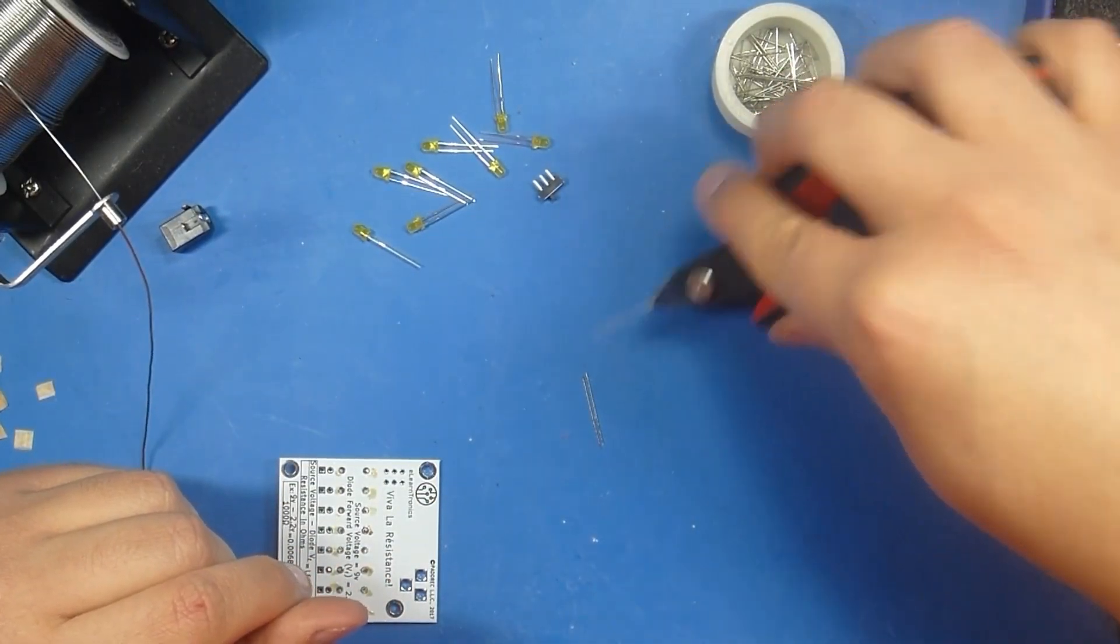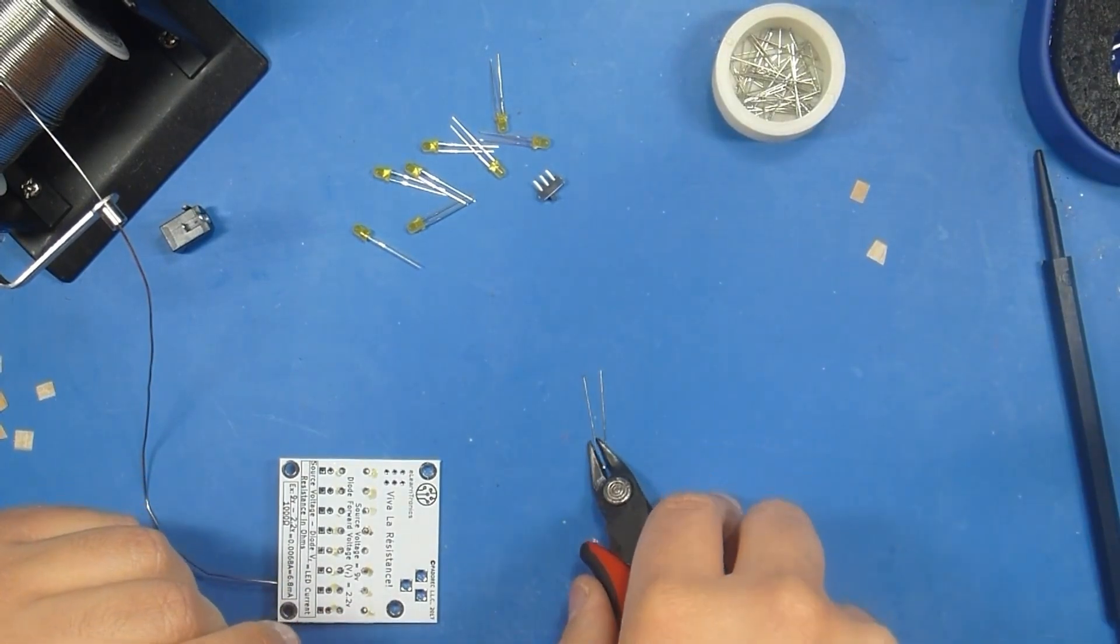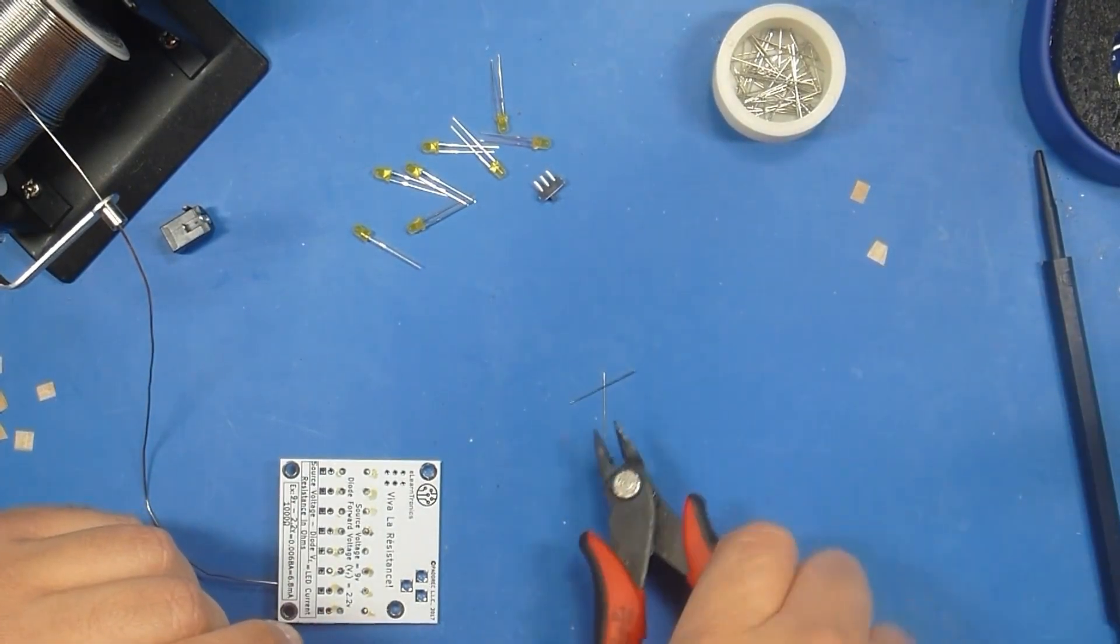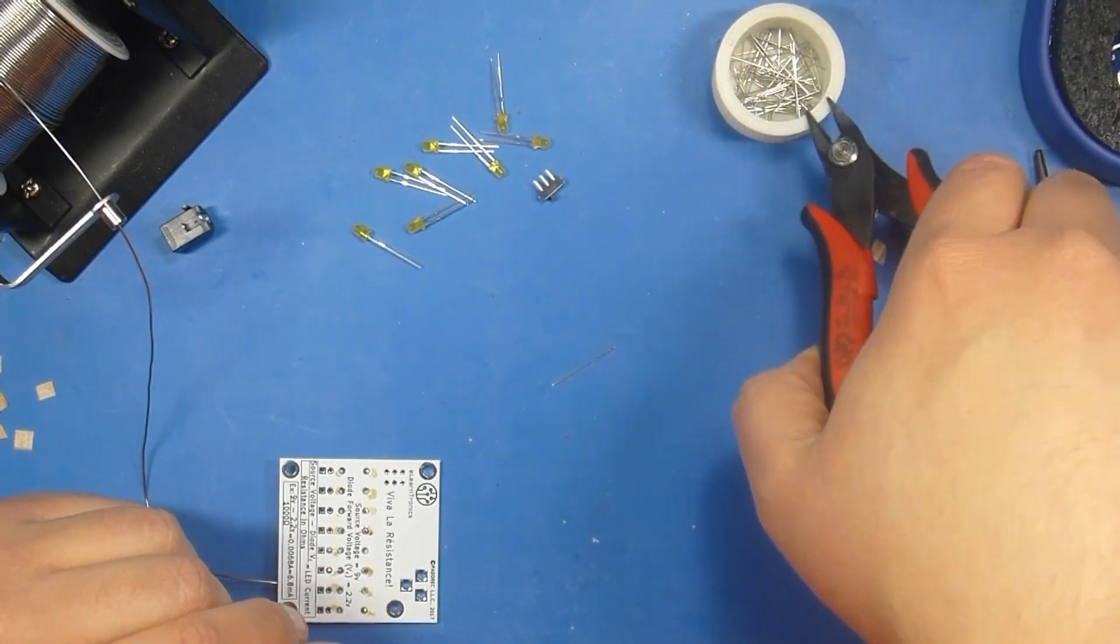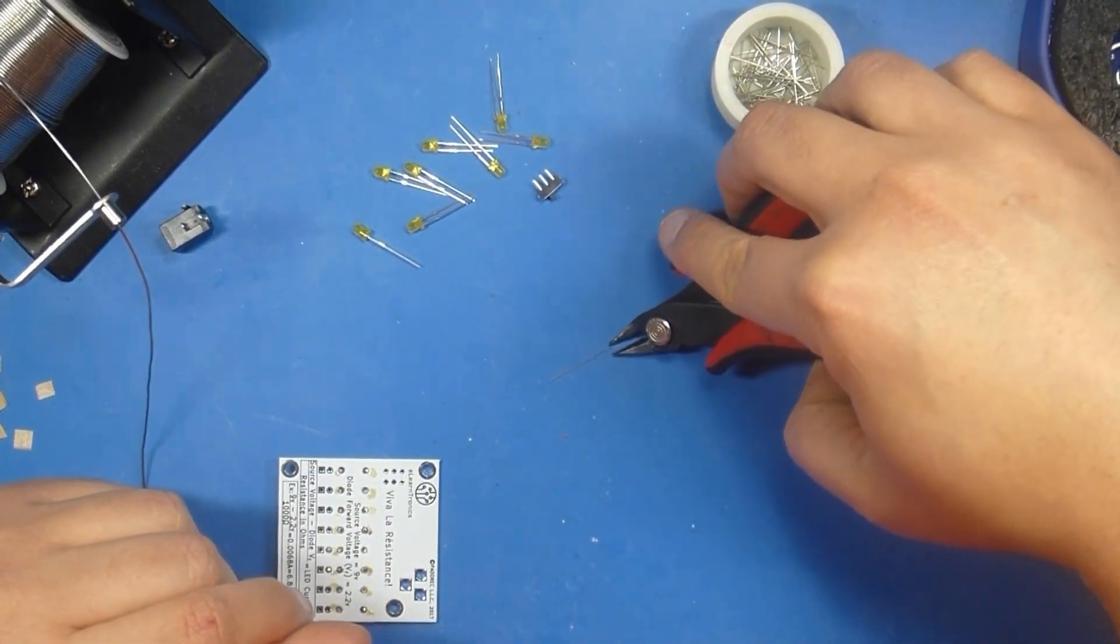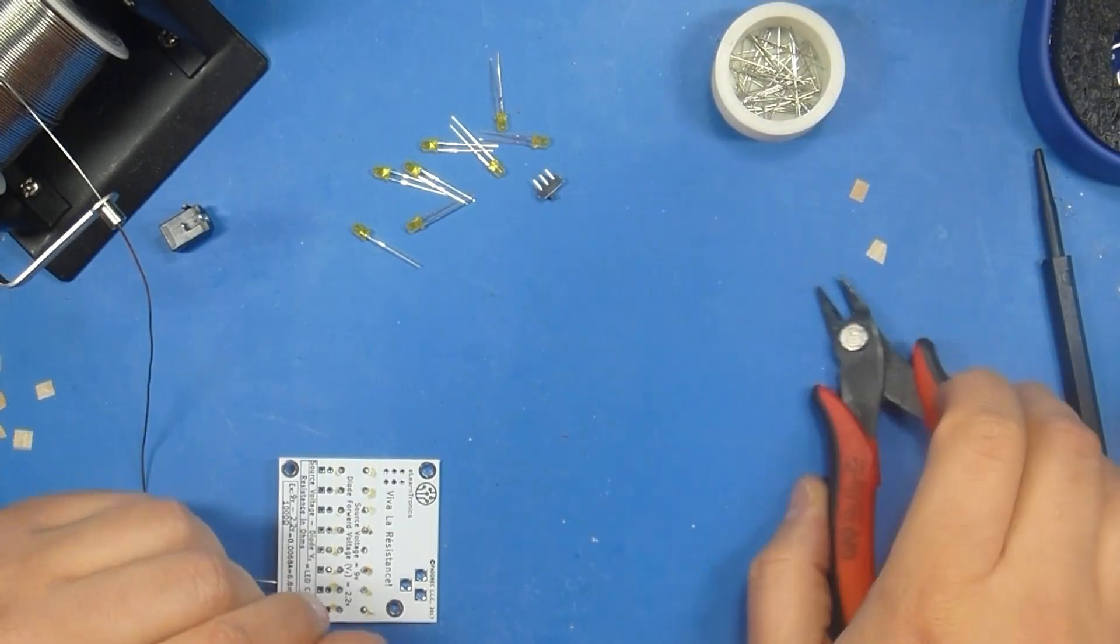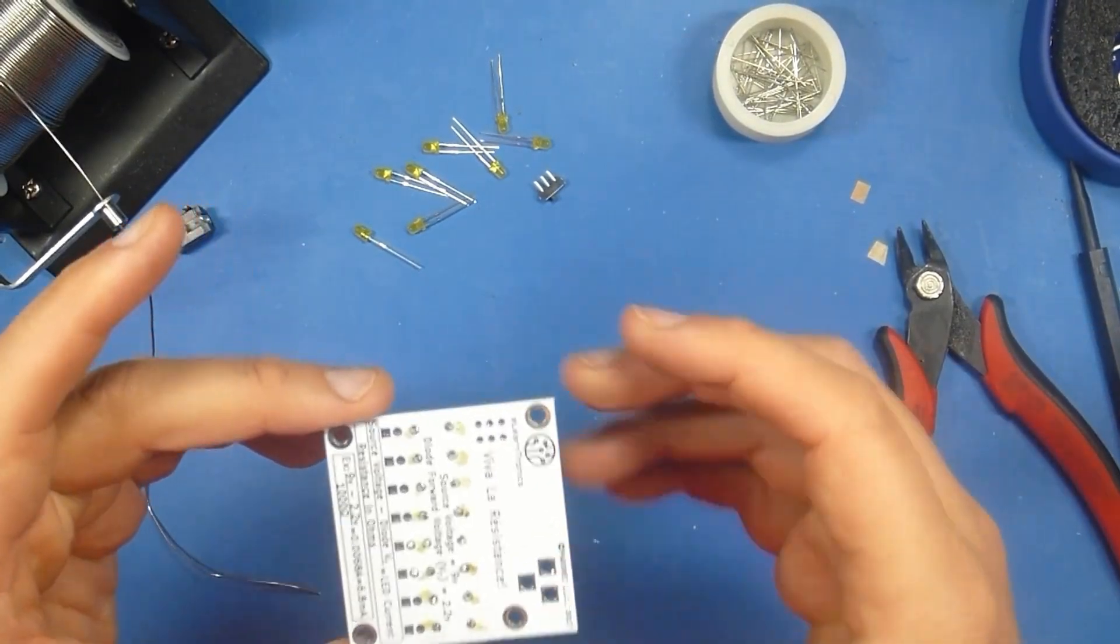And, you know, sometimes the flush cutters actually, if you don't squeeze too hard, can help you to pick up these leads because they can be pretty difficult to get off the table. And last one. Okay, nice clean work surface. We all want a clean work surface.